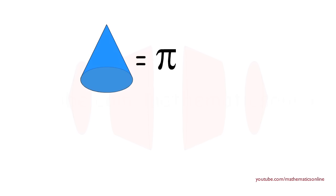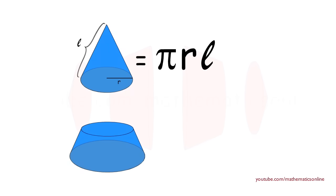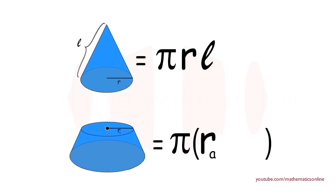The surface area of a cone without its base is equal to pi times the radius times the lateral height. And the surface area of a frustrum without its top and bottom bases is equal to pi times the radius of the top base plus the radius of the bottom base, times the lateral height.